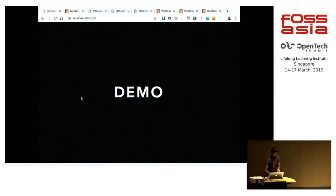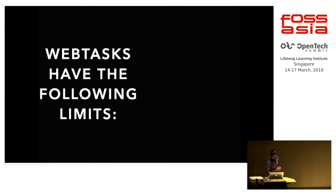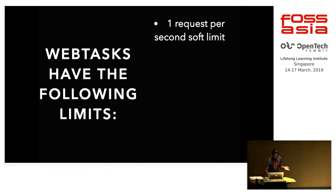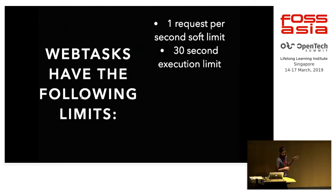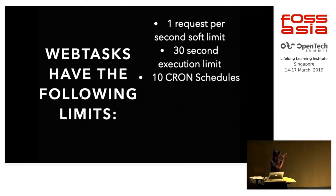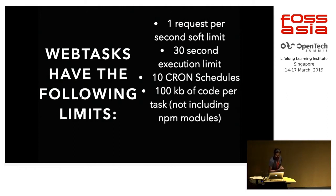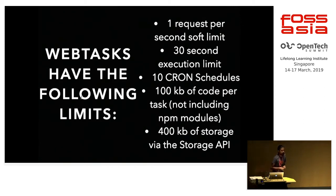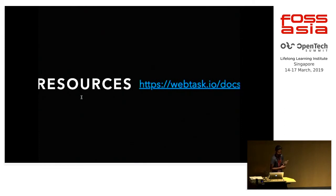Moving back to the presentation — these are the current limitations with Webtask.io. It is free. There is a soft limit of one request per second, but it is just a soft limit — I tried more than that and it still works. There is a 30-second execution limit. You can set up cron schedules, which I will explain next. Each code file has a 100 KB limit, and there is 400 KB of JSON storage if you use it instead of a normal MongoDB or other database. For more resources go to webtask.io/docs.